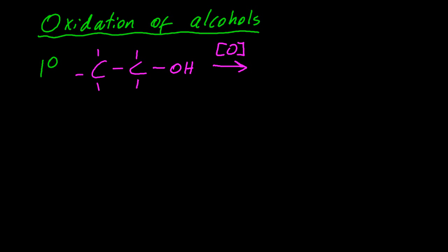O in square brackets means oxidation, and one of the definitions of oxidation is removing hydrogen. And so this hydrogen and that hydrogen are both removed, turning the alcohol into an aldehyde.